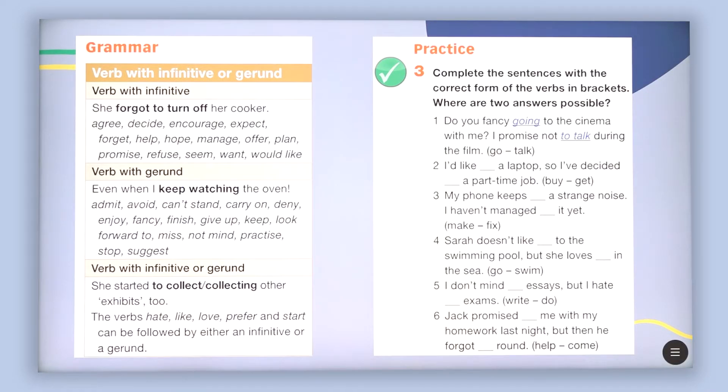Grammar. Verbs with infinitive or gerund. Here you are going to see a few examples with which we are going to use the verbs in the infinitive or the gerund form. The infinitive ones are agree, decide, encourage, expect, forget, help, hope, manage, offer, plan and so on. For example, she forgot to turn off her cooker. So it means that to is used with the main verb and this is called the infinitive.